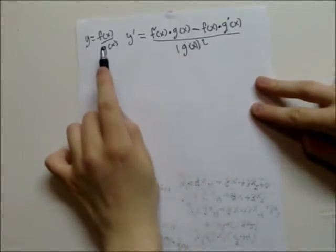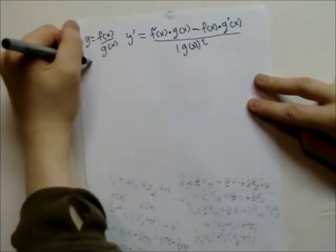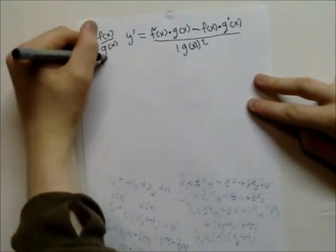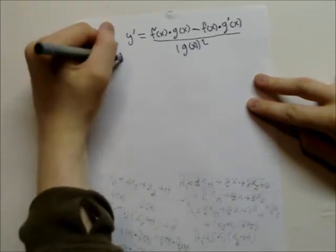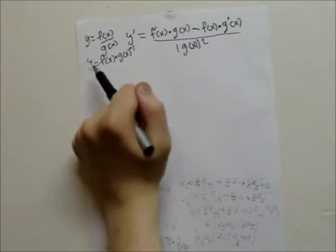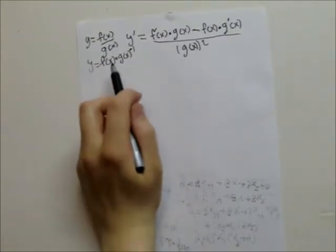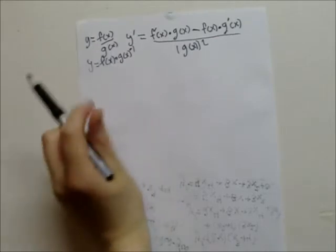You could actually use the product rule, if you take this, and you go y equals f of x times g of x to negative 1, then you could do the product rule, which I taught you earlier, or you learned in class. And when you do the product rule, you would actually get the same answer, and you'd get a negative here.